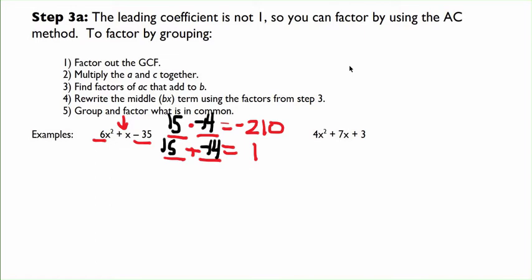So unlike when our leading coefficient was one, we can't just use those numbers in our factors. What we'll have to do is write out the entire expression. We keep the 6x squared the same, but instead of writing just x, we're going to split it up and write it as plus 15x minus 14x. Notice those two added together do add up to 1x, but we're just separating it. And then we keep our constant at the end the same, minus 35.